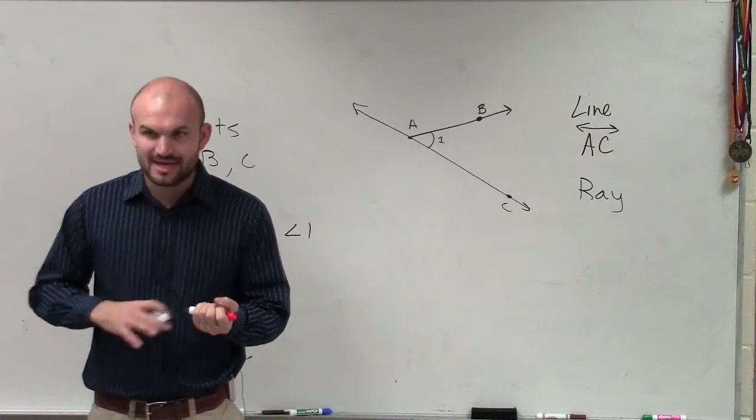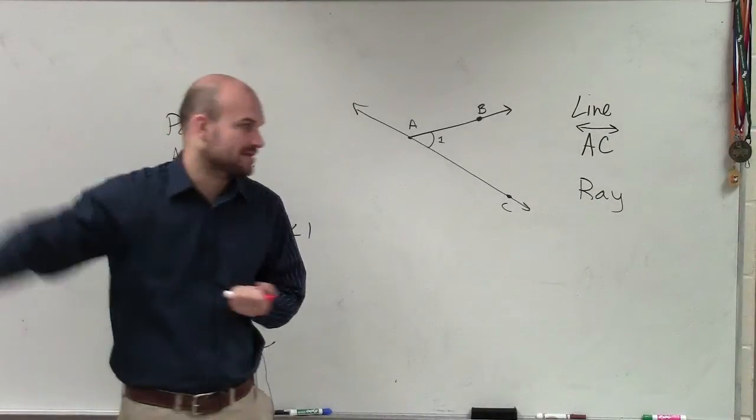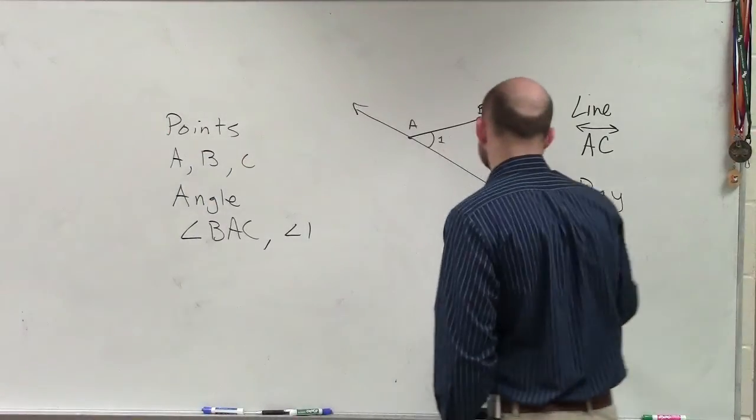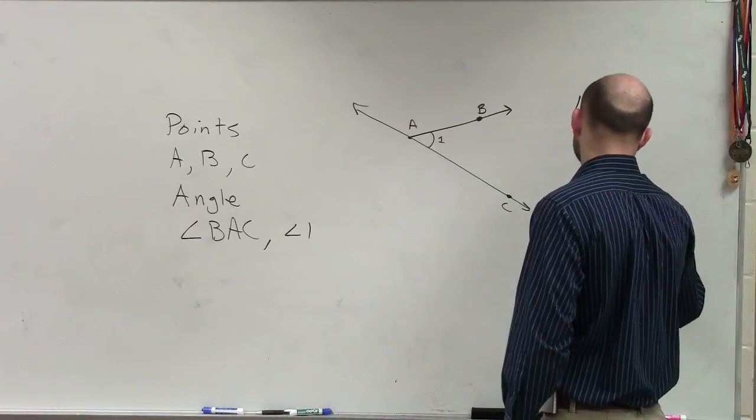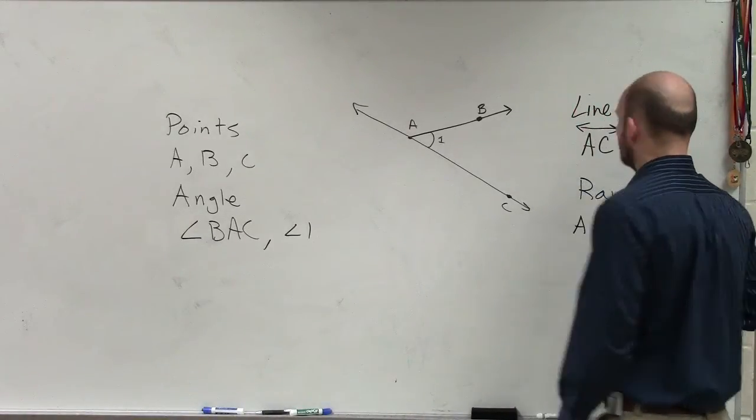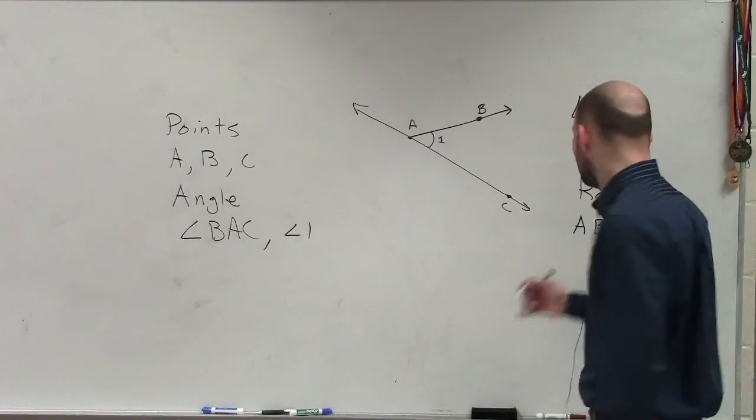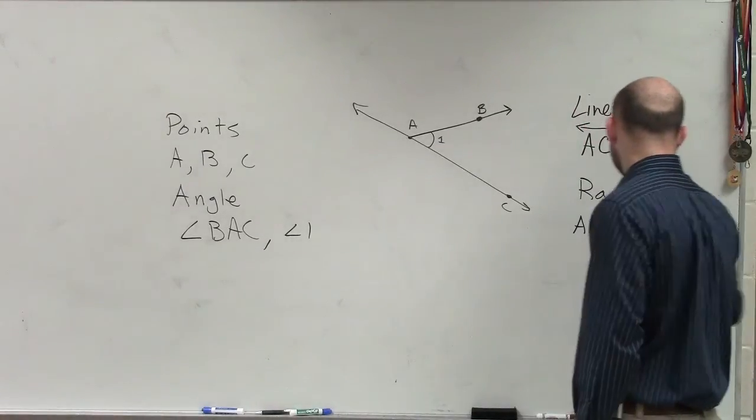Remember, a ray has an end point and then extends indefinitely in one direction. So two rays that we can talk about are AB and AC. But remember, we're talking about rays, not lines. So they have an end point and an extension.